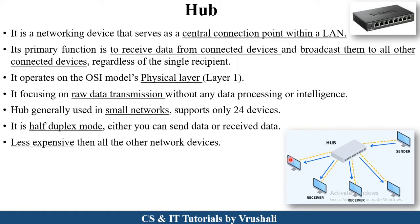Broadcasting to all devices is also a disadvantage of the hub, and this is resolved in more advanced network devices like switch and router. Hub works only in Local Area Network and is generally used in small networks. It supports only 24 devices and works on half duplex mode, meaning it can either send or receive information — not both at the same time. That's why it is a less expensive network device. Hub works on the first layer of the OSI model, that is the physical layer.